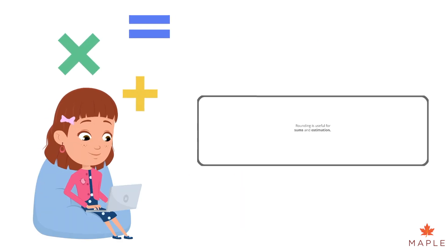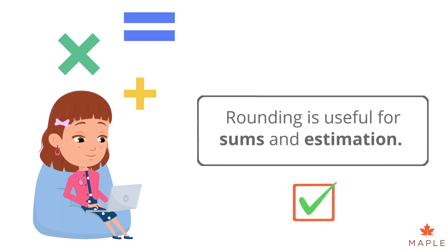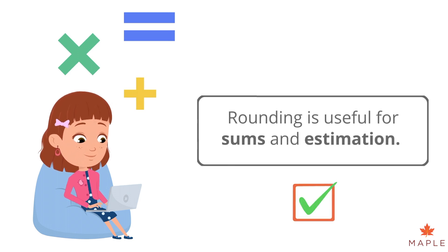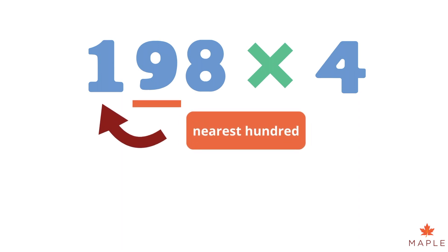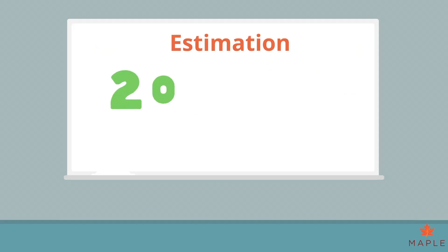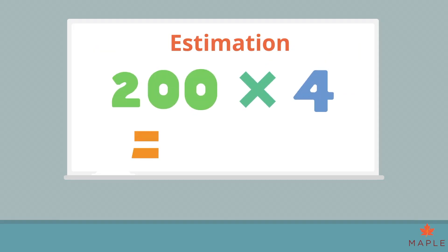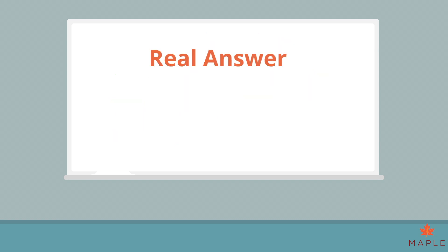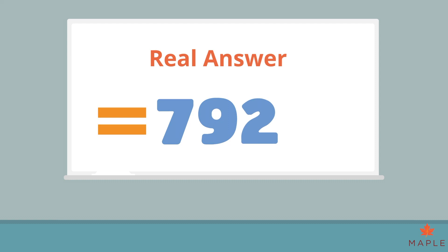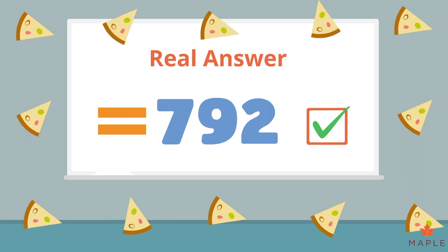Rounding is especially good for estimating answers to calculations when checking your work. Before you do a calculation like one hundred and ninety-eight times by four, we can round one hundred and ninety-eight up to two hundred. Two hundred times four equals eight hundred, so the real answer should be close to this number. The real answer to one hundred and ninety-eight multiplied by four is seven hundred and ninety-two, which is very close to my estimate of eight hundred.